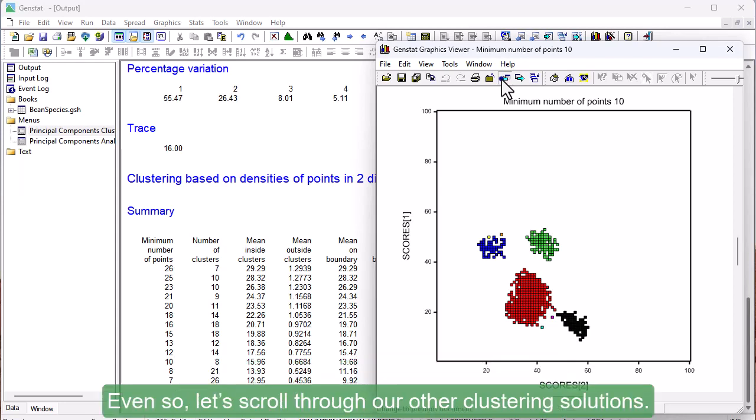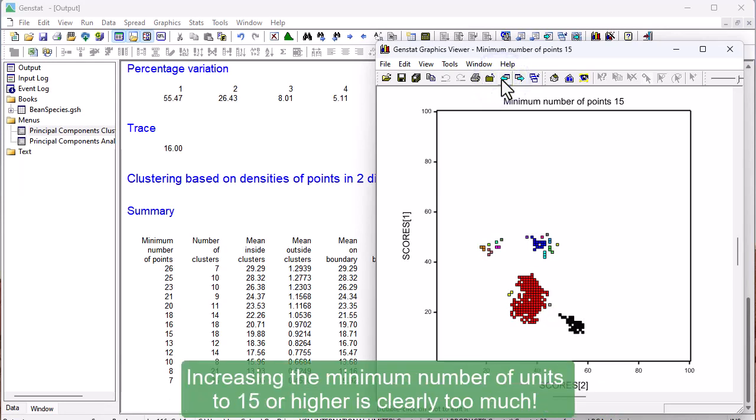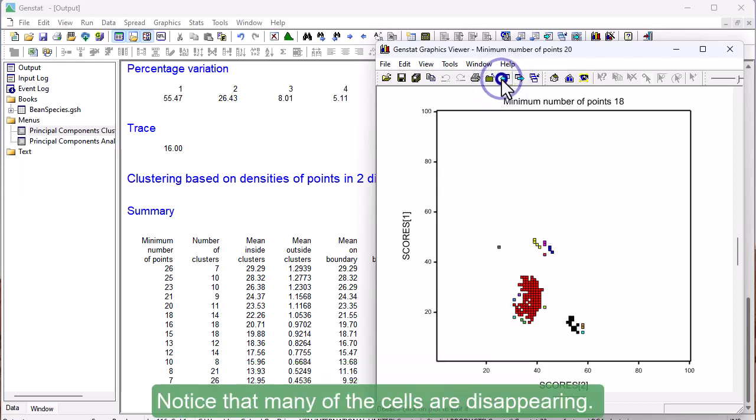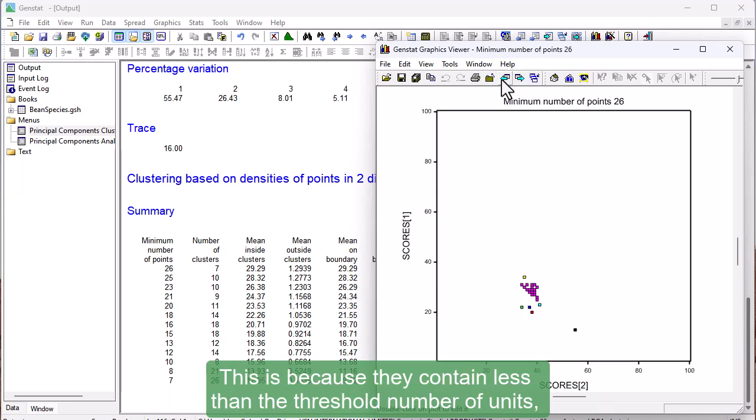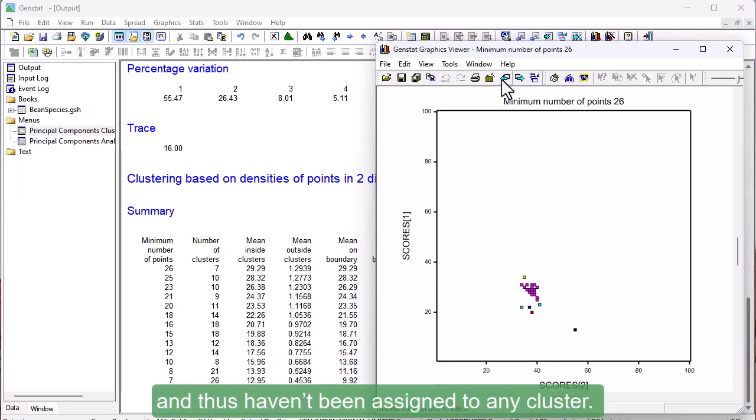Even so, let's scroll through our other clustering solutions. Increasing the minimum number of units to 15 or higher is clearly too much. Notice that many of the cells are disappearing. This is because they contain less than the threshold number of units and thus haven't been assigned to any cluster.